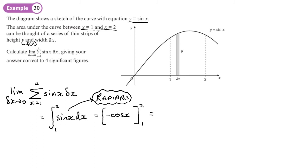So this is going to be negative cos of two minus the negative cos of one. So let's work that out and see what we get.